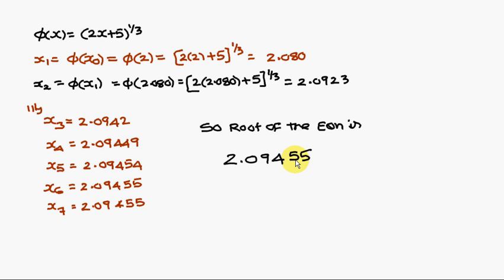This is how to find the root of an equation using the iteration method. Always remember the formula: x1 = phi(x0), x2 = phi(x1), and so on. Also remember to design phi(x) such that |phi'(x)| < 1 for all x in the interval.